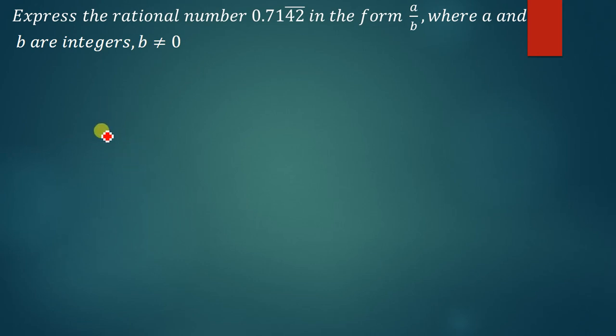The first thing that we are going to do to solve this question is to let the given repeating rational number be equal to a variable. So we say let x be equal to 0.7142 bar, so as we can see here 42 is repeated.